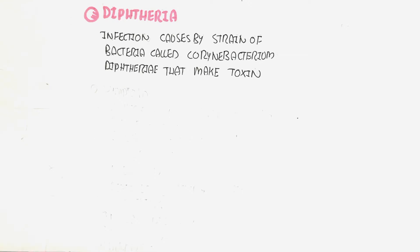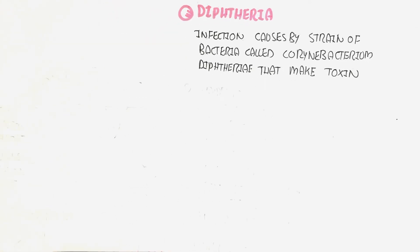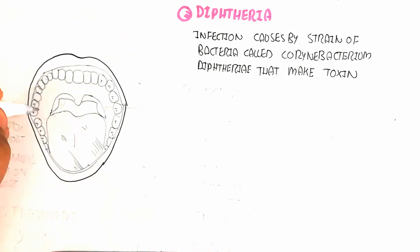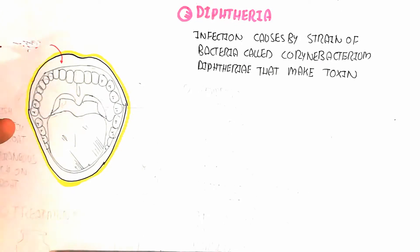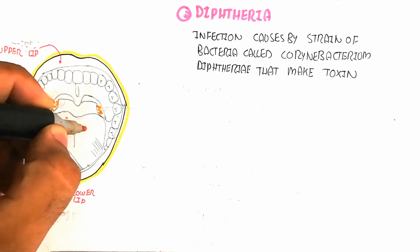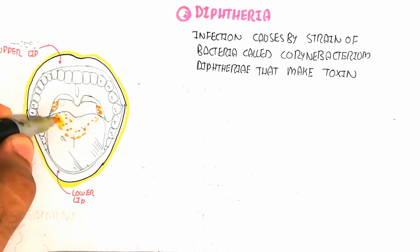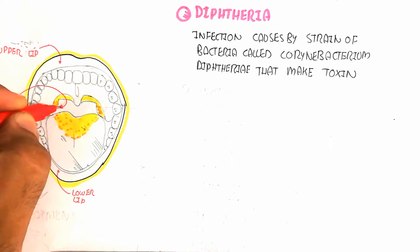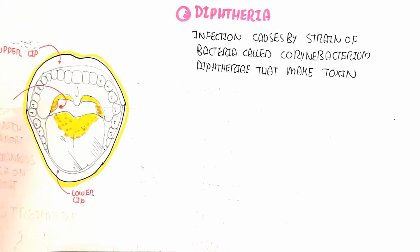This toxin is severe and can lead to death. We will first understand the signs and symptoms. Here is the oral cavity, which contains the throat, and inside the throat are the tonsils — the lateral upper tonsils — and below is the tongue. This leads to a whitish-gray membranous patch on the throat.